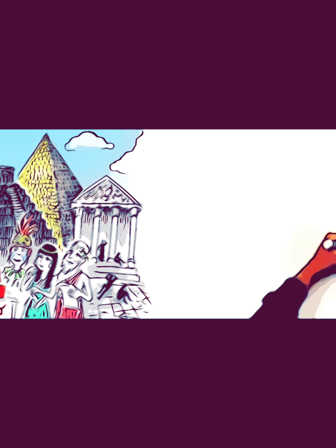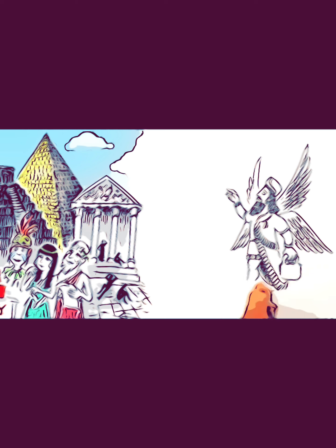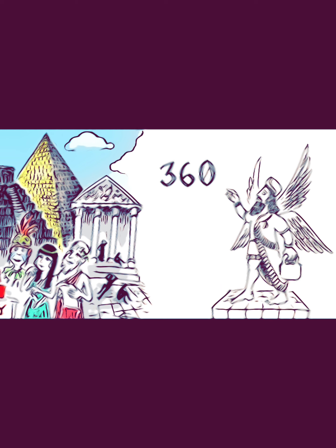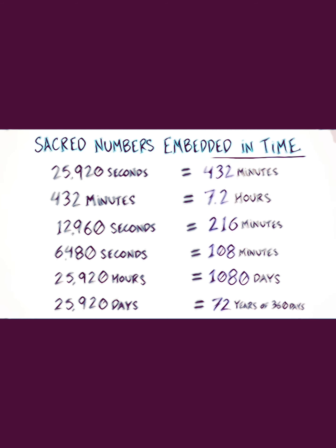The Sumerians believed the year was once actually 360 days in length, and as a result of some cosmic catastrophe, the day changed. Each second corresponding to one year of the great year equals exactly 432 minutes.